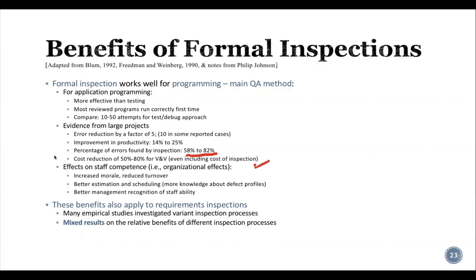Another benefit of formal inspection is its impact on staff competence and organizational effects: increased morale, reduced turnover, better estimation and scheduling, and better management recognition of staff ability. These benefits also apply to requirement inspection. Many empirical studies investigated varied inspection procedures, and mixed results on the relative benefits of different inspection procedures can be combined to reach one final decision.